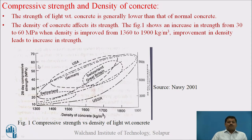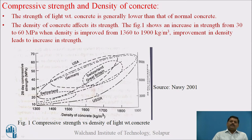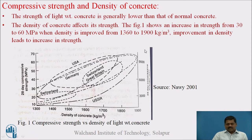Improvement in density leads to an increase in strength, as we can see. The graph shows the relationship of compressive strength to density for different countries — Germany, USA, Switzerland, Great Britain, and USSR/Russia. The strength is doubled from 30 to 60 MPa when the density increases to 1.5 times of 1360, that is 1900 kg per meter cube.